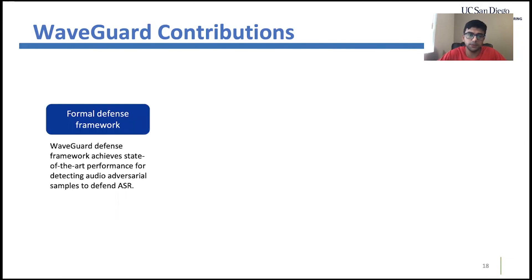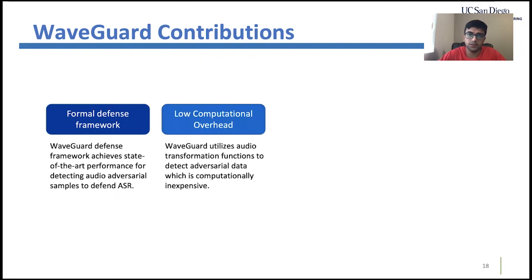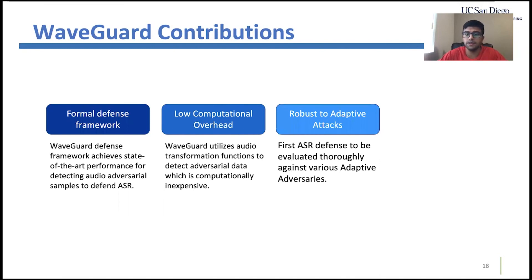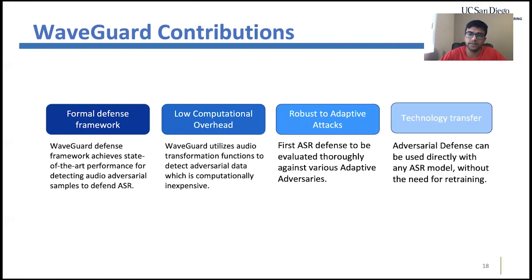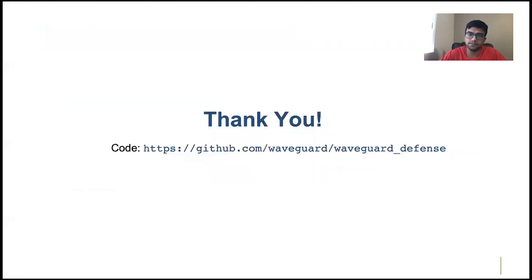Our main contributions are: we proposed a formal defense framework that achieves state-of-the-art performance for detecting audio adversarial examples. The computational overhead of WaveCard is minimal, since transformation functions are computationally much cheaper than ASR inference. The framework is robust to adaptive attacks when using perceptually informed representations, and it can be directly used with any ASR model without retraining — only the detection threshold needs to be adjusted. Our code is available at the provided link.